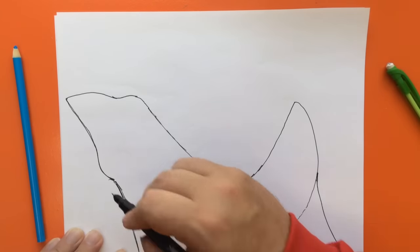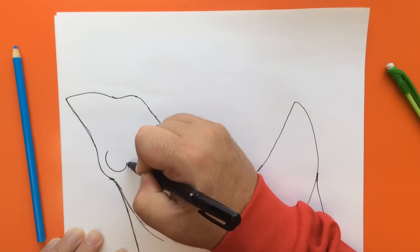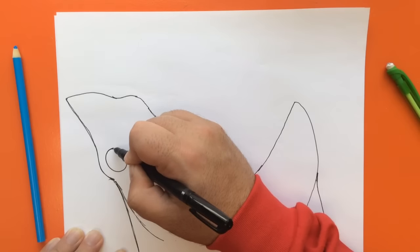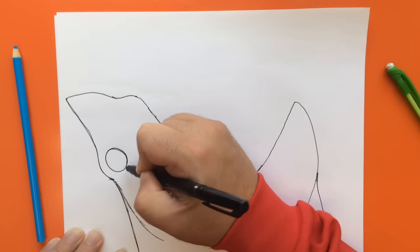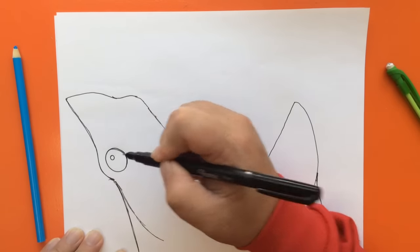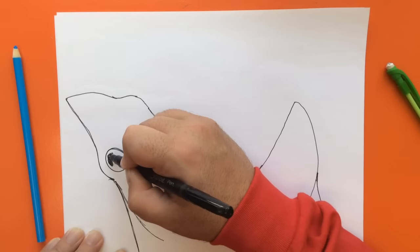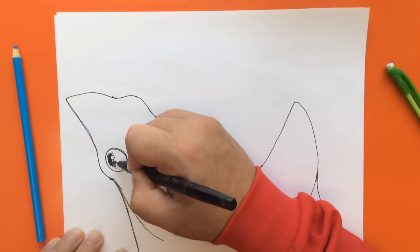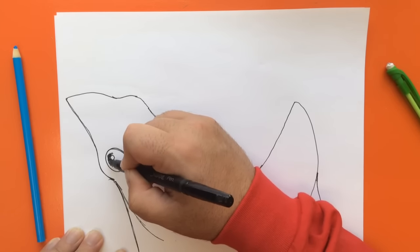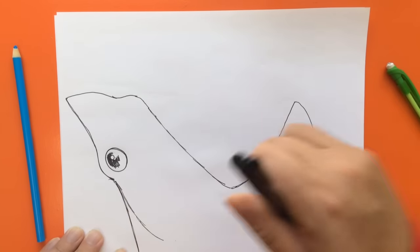For my next step, I'm going to add the eye. Right here where this bump is, I'm going to draw a circle and put a little bit of a light catcher right there. We don't really know what Megalodon's eye looked like, but I imagine it looking like a Mako or a Great White, mostly dark. So I'm going to go ahead and color in this eye.